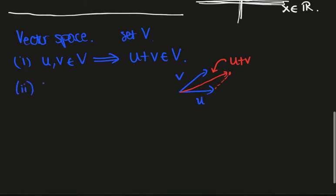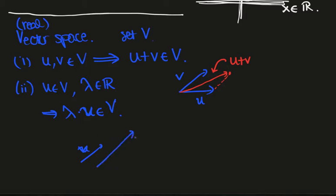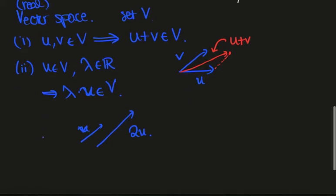The second one is that if u is in V and lambda is in R, so this is the definition of a real vector space, then this implies that lambda times u is also in V. So if I take a vector u and I scale it, maybe double it, I also get another vector. These are the two primary conditions of a vector space.